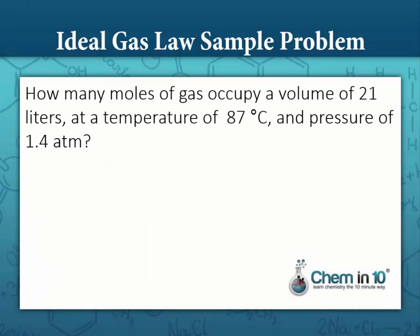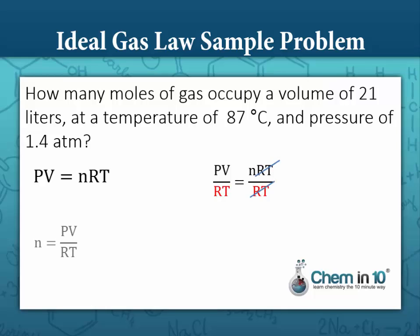Let's look at a sample problem. How many moles of a gas occupy a volume of 21 liters at a temperature of 87 degrees Celsius and a pressure of 1.4 atm? We want moles of a gas. We can get that from the ideal gas law — divide each side by RT — and we get n equals PV over RT.